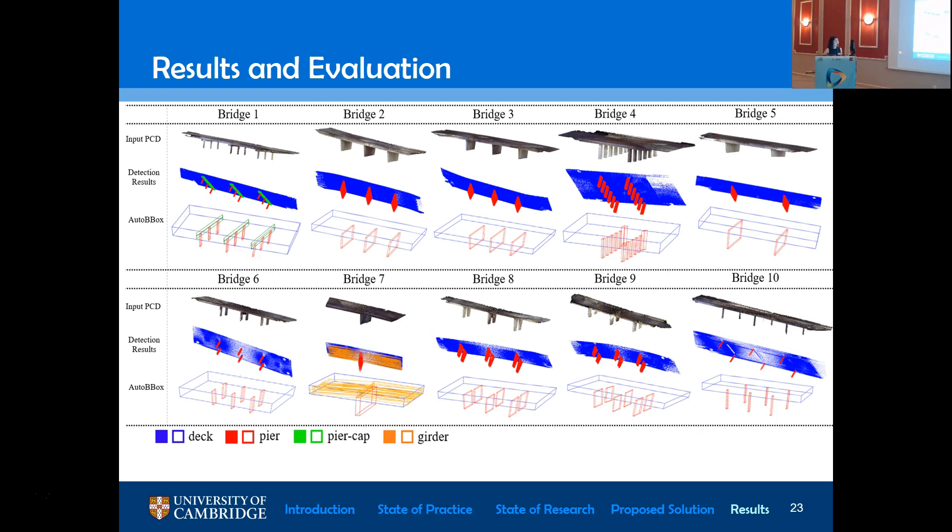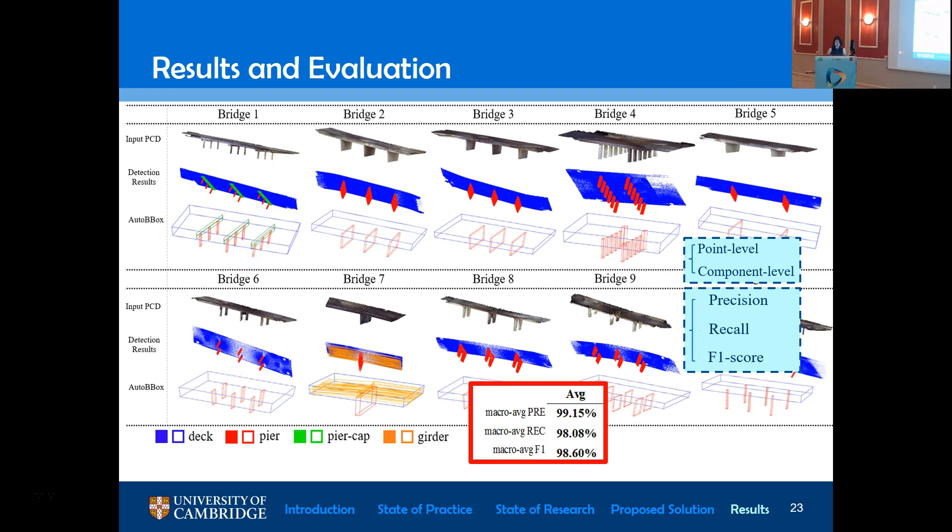We tested it on ten highway bridges, and the results are very promising. We evaluated both on point level and component level. Point level means that we assign each point a class label according to the ground truth segment we created. And at the component level, we compared the ground truth segment oriented bounding box with the automatic ones. And we generated the performance metrics precision, recall, and F1 score. We reached the precision 99% with the 98% recall and the 98% F1 score. The processing time is roughly 20 to 30 minutes on average. Even though the manual segmentation is not the most time-consuming part in the whole process from cloud to BIM, we still have 70% time saving, which is really significant.